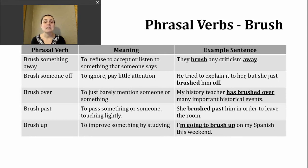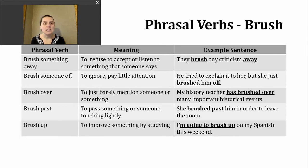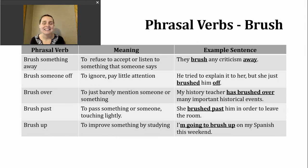Another phrasal verb is brush over, which means to just barely mention someone or something. Example: my history teacher has brushed over many important historical events. When we use 'brush over,' we're usually hoping for more detail, but something is being shared very quickly. The next phrasal verb is brush past — this connects to the third definition. It means to pass something or someone, touching lightly. Example: she brushed past him in order to leave the room.